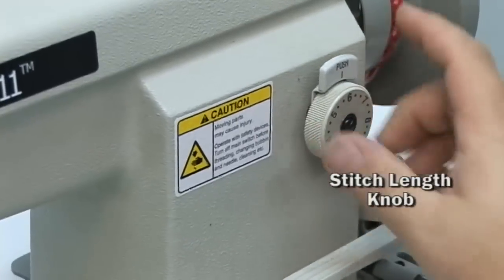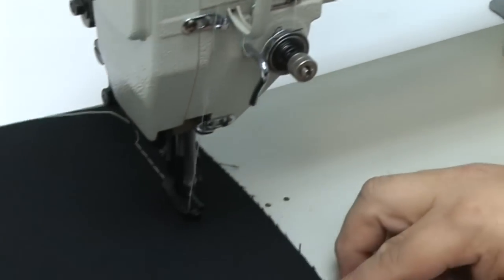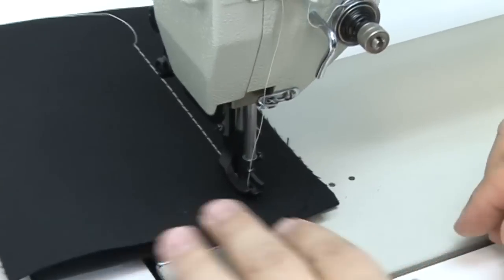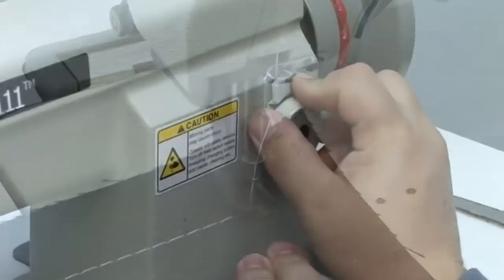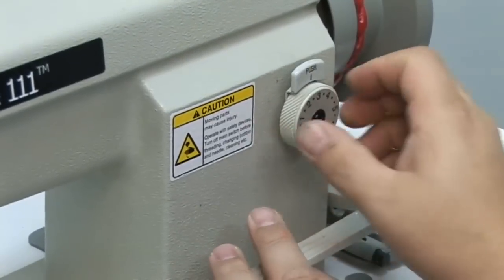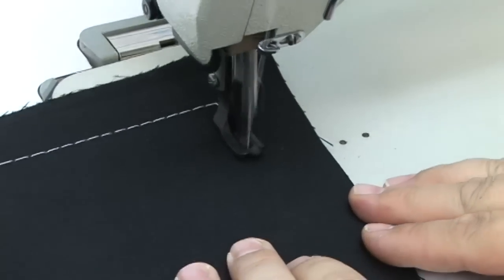Your stitch length is adjusted here all the way from 8mm to anything down to zero. Here we are sewing a 6mm. Here we're setting the machine in about a 3mm straight stitch.